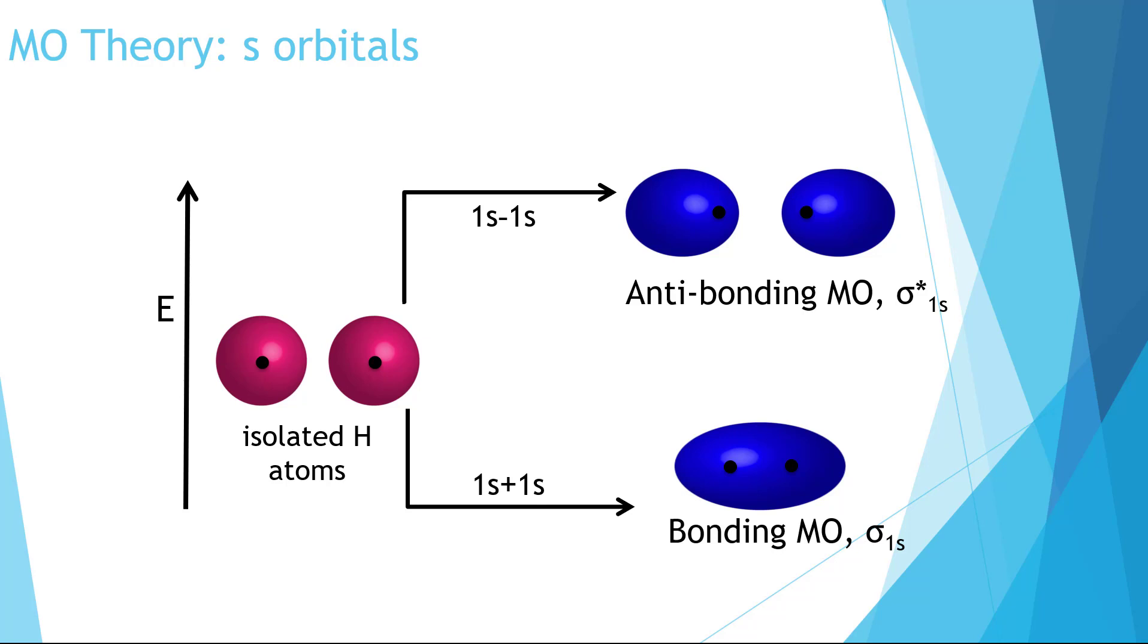There is one more nomenclature item we need to talk about, and that is the sigma that you see. This describes the shape. In this video, we will only be discussing sigma. But we'll get into the pi shapes in the following video. Notice it is symmetrical around the bond. That is why it's a sigma orbital.